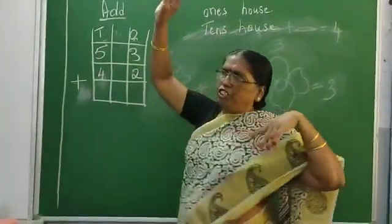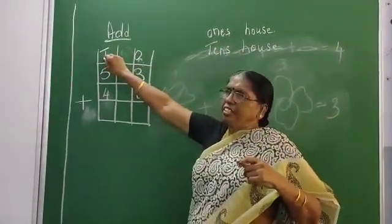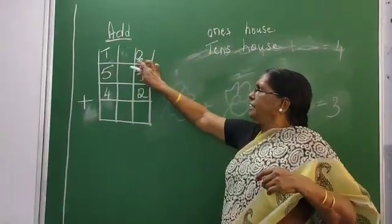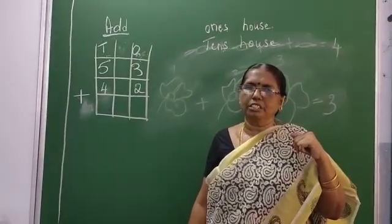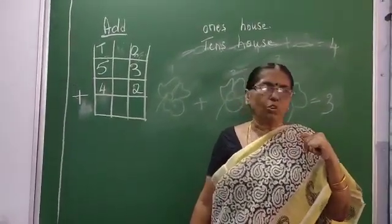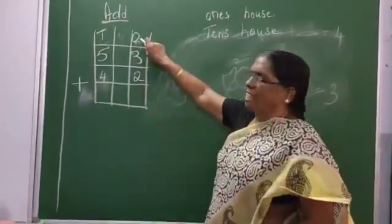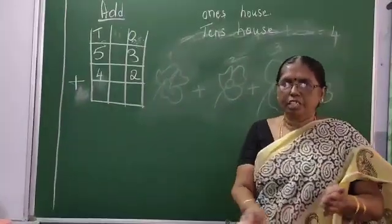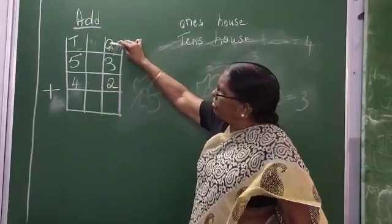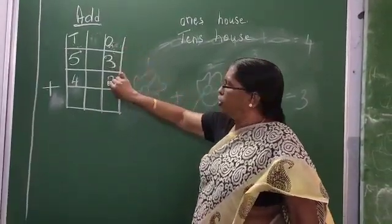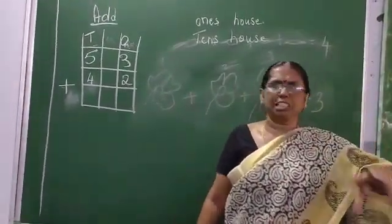Now I tell you: which one will you start adding? Will you add the ten's house first, or will you add the one's house first? You should add the baby house first. What is the baby house here — one's house or the ten's house? Yes, one's house is called the baby's house. So, what are the numbers in the one's house? Three and two. Then how do you add three and two? No magic — everything has a logic.